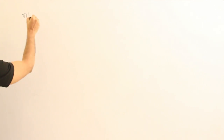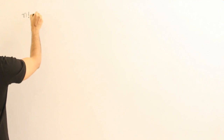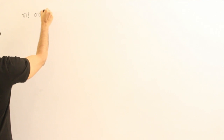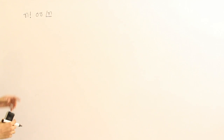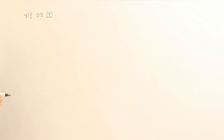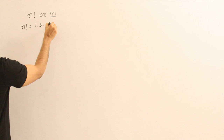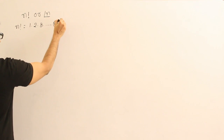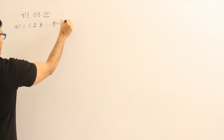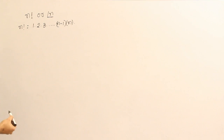The most important thing is n factorial. This is called n factorial, and it can also be written as factorial n — both notations are popular. The meaning of n factorial is the product of the first n natural numbers, which means n factorial equals 1 × 2 × 3 × ... × (n−1) × n.